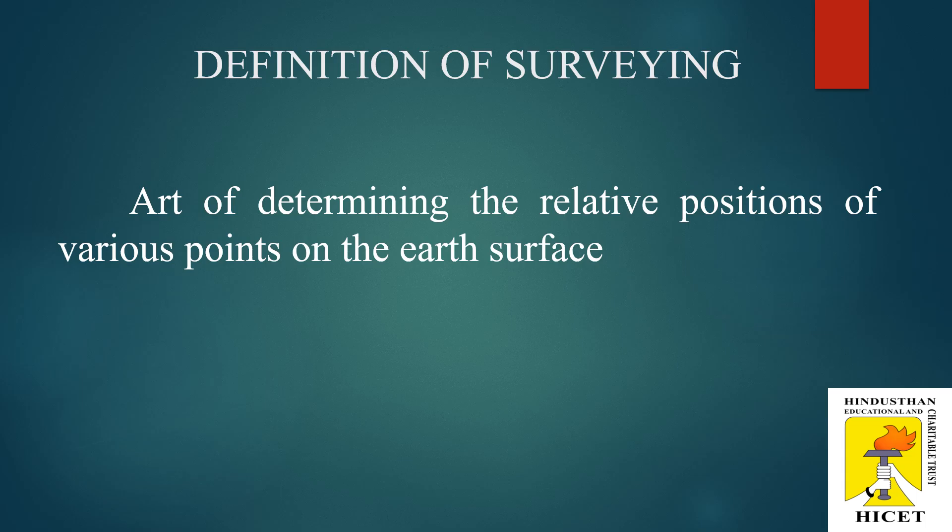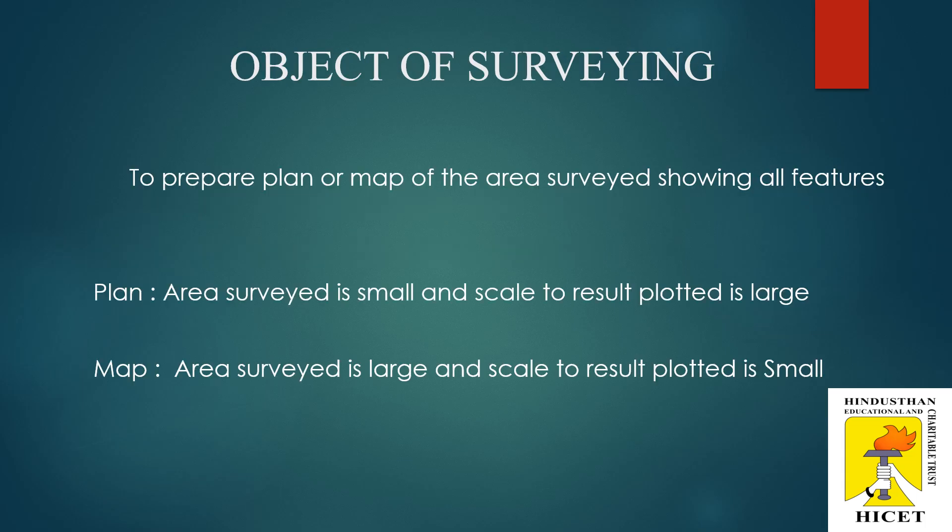Angular measurement means the angles may be calculated with the help of a compass. So, fixing a point on the earth's surface in a two-dimensional manner is called surveying. The art of determining the relative position of various points on the earth's surface is called surveying. This is the basic definition of surveying. Next one is the object of surveying.